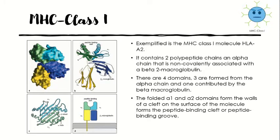The MHC class 1 molecule consists of two polypeptide chains: the alpha chain, encoded in the MHC on chromosome 6, non-covalently associated with the smaller beta-2 microglobulin chain encoded on chromosome 15. Only the class 1 alpha chain spans the membrane. The complete MHC class 1 molecule has four domains — three from the MHC-encoded alpha chain and one from beta-2 microglobulin. The alpha 3 domain and beta-2 microglobulin closely resemble Ig domains. The folded alpha 1 and alpha 2 domains form the walls of a cleft on the molecule surface — known as the peptide binding cleft or groove — where the peptide binds.